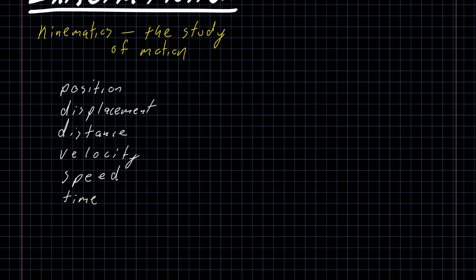But the important idea here is that these terminologies seem similar. Position, displacement, and distance are three different ways of talking about where an object is. Velocity and speed are two different ways of talking about how fast an object is moving.